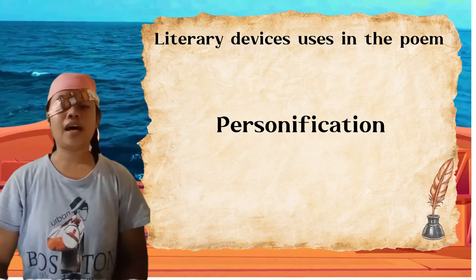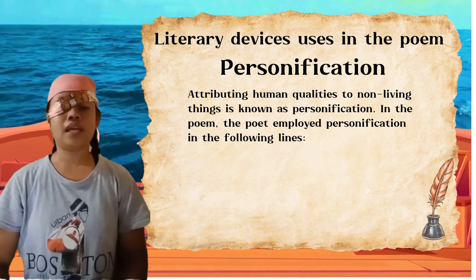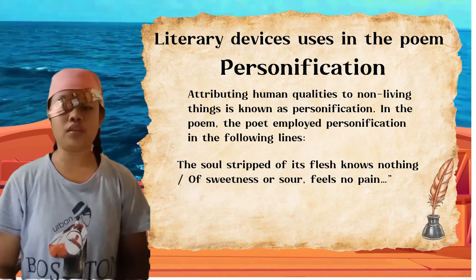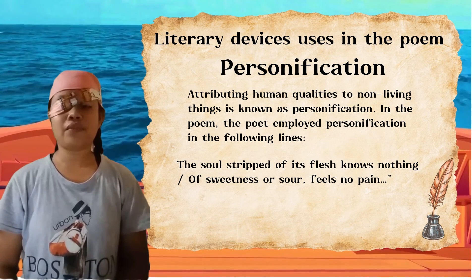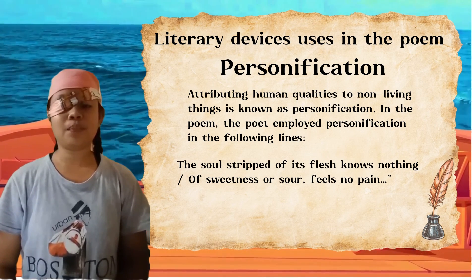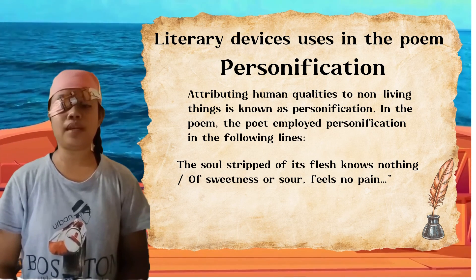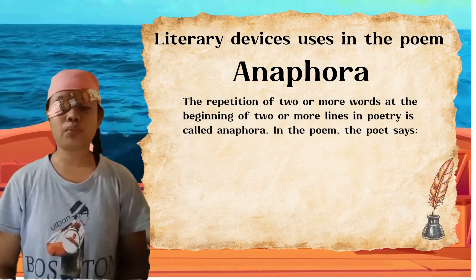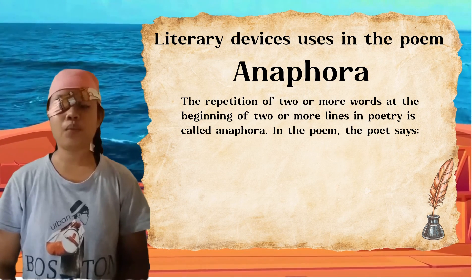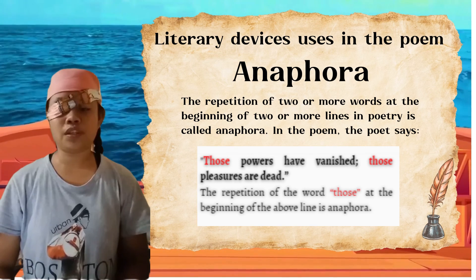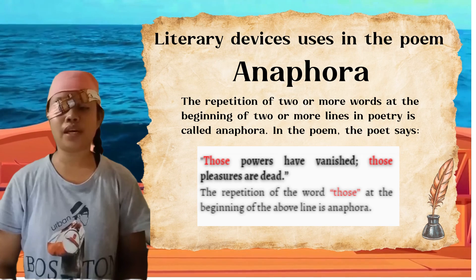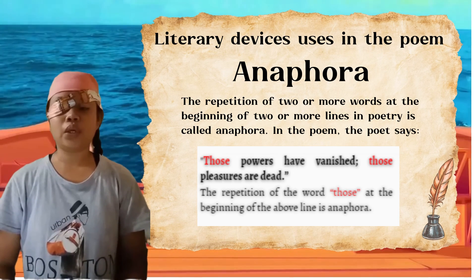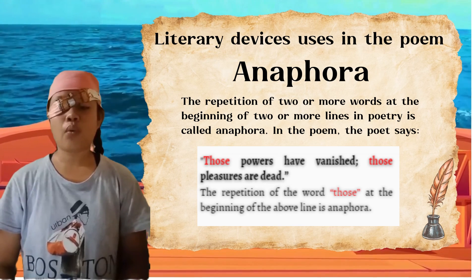Third: Personification — attributing human qualities to non-living things. In the poem, the poet employs personification in the lines: 'The soul, stripped of its flesh, knows nothing of sweetness or sour, feels no pain.' These lines describe the fleeting nature of life. Fourth: Anaphora — the repetition of two or more words at the beginning of two or more lines. The poet says, 'Those powers have vanished. Those pleasures are dead.' The repetition of 'those' is anaphora. The speaker believes the world is wasted away, and instead of focusing on earthly pleasures, one should devote himself to God.